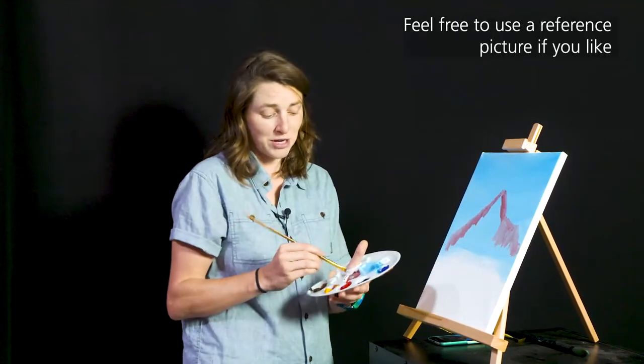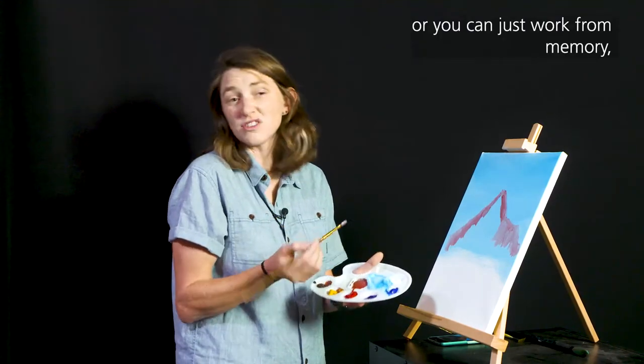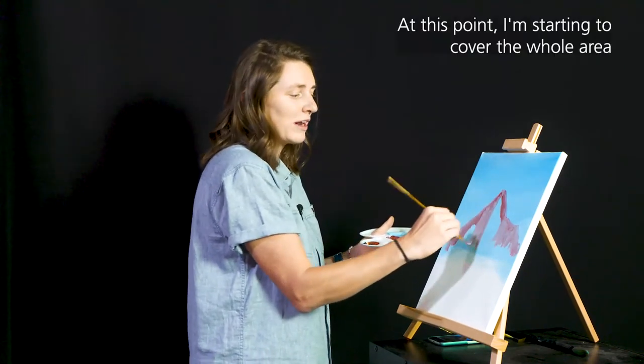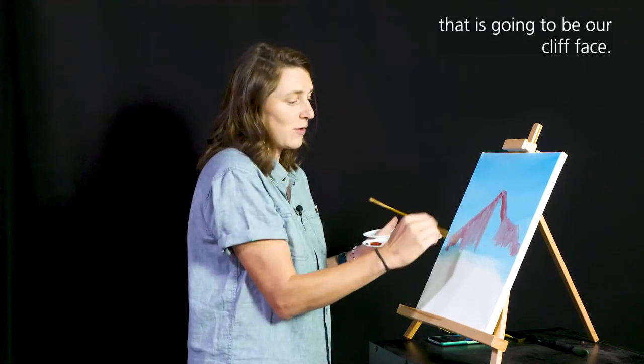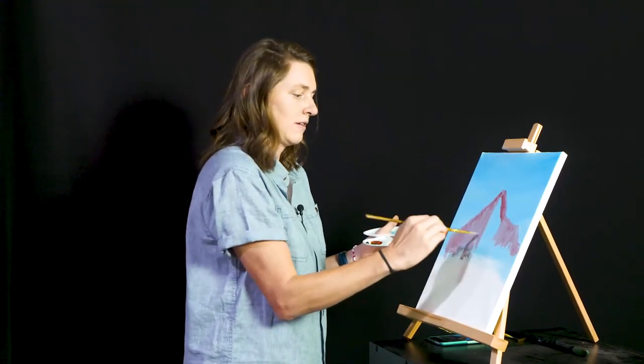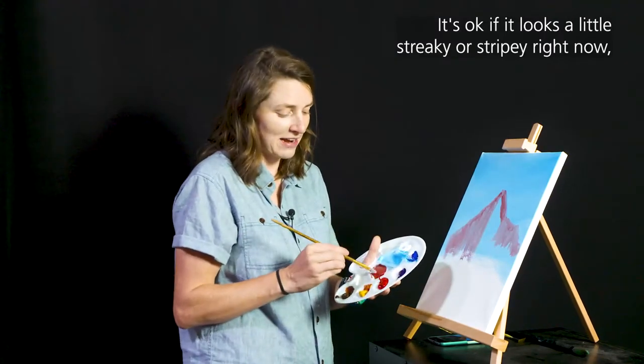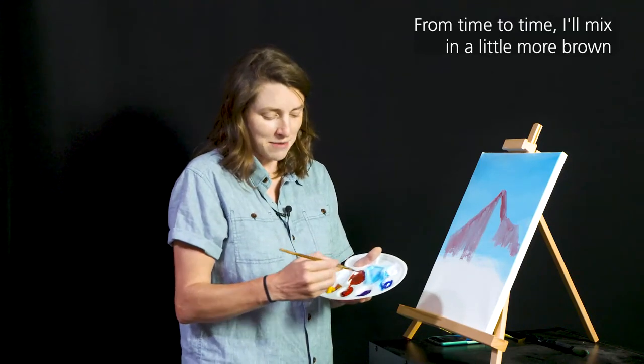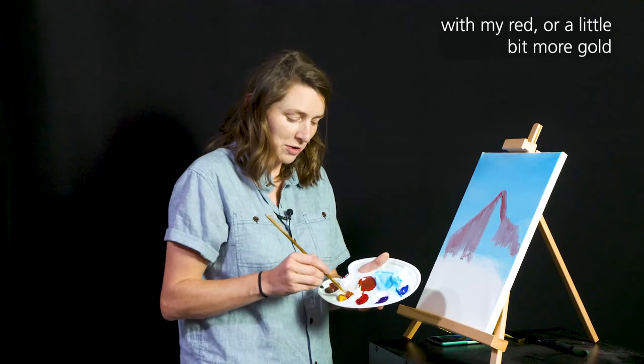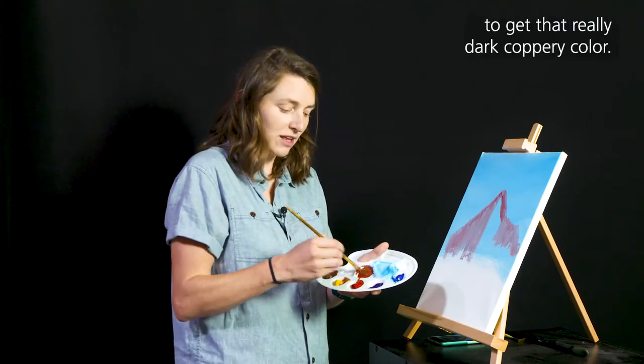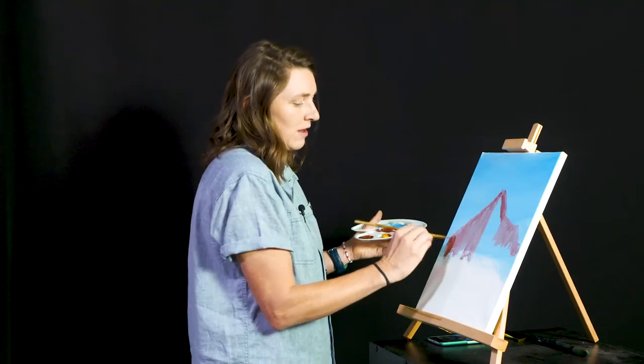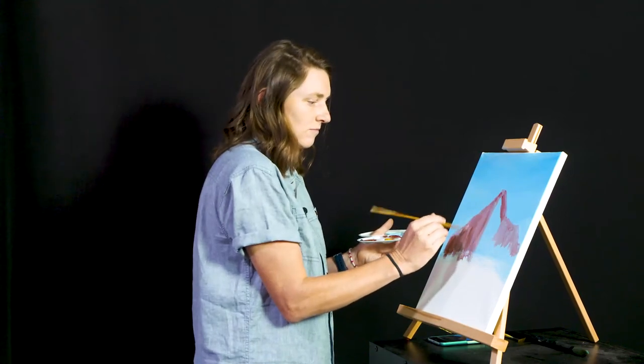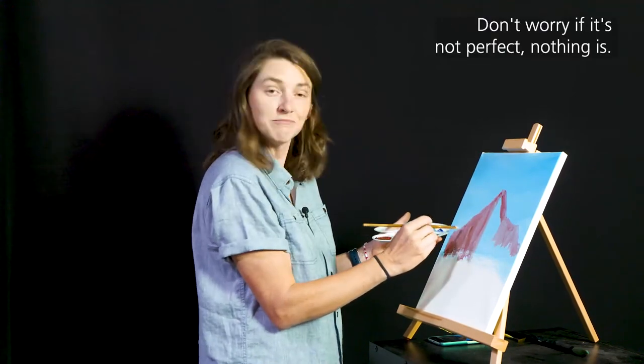Feel free to use a reference picture if you'd like, or you can just work from memory or from your imagination. At this point I'm starting to cover the whole area that is going to be our cliff face. It's okay if it looks a little streaky or stripey right now. It's kind of what our rocks look like in real life. From time to time I'll mix in a little bit more brown with my red or a little bit more gold to get that really dark umber color. And I can start to build some darker shades. Don't worry if it's not perfect. Nothing is.